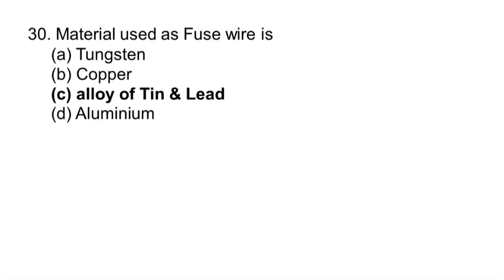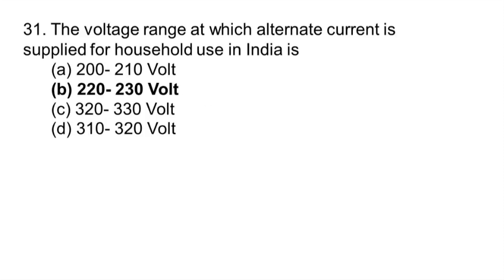Material used as fuse wire: alloy of tin and lead. The voltage range at which AC is supplied for household use in India is between 220 to 230 volts.